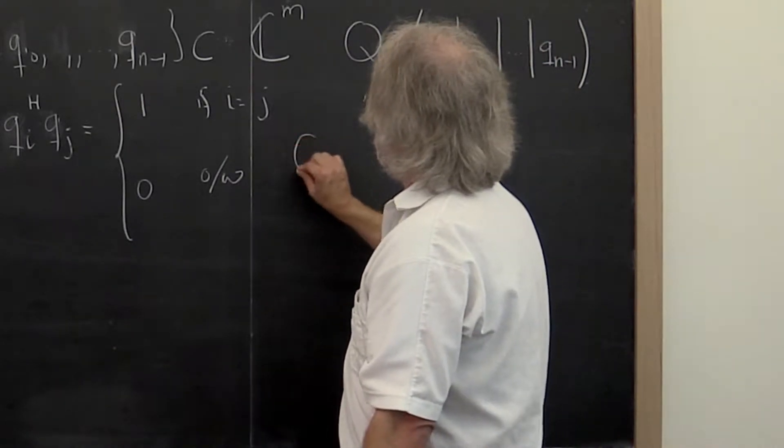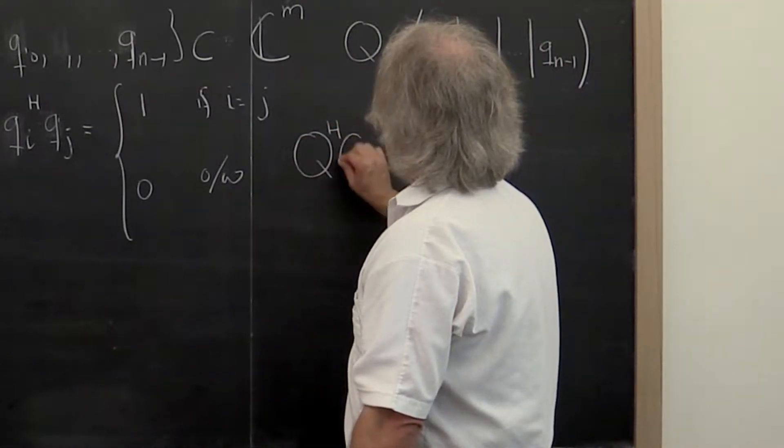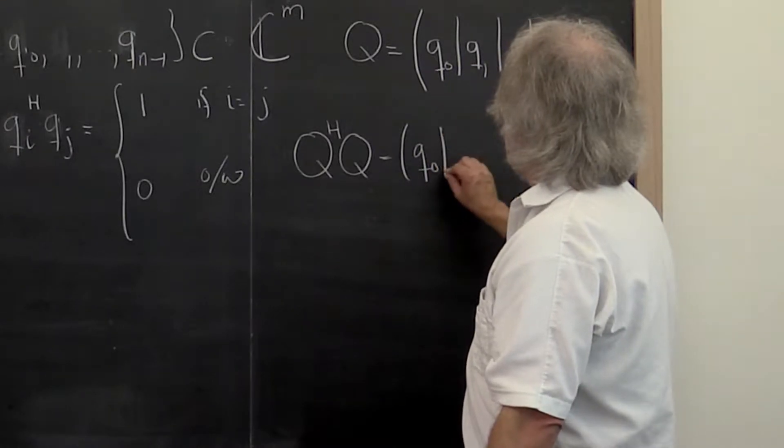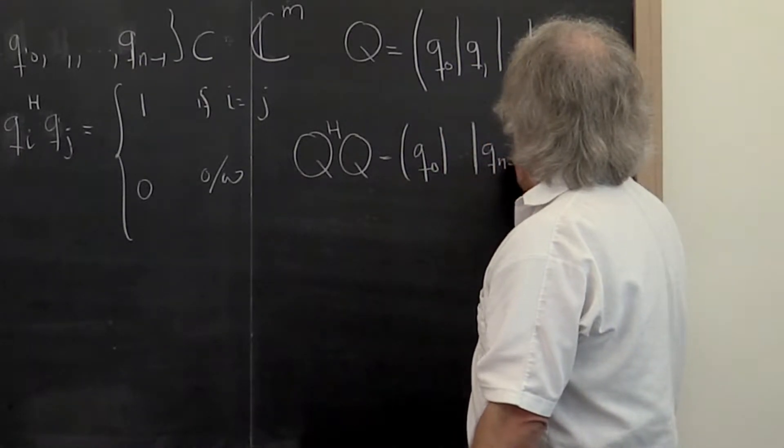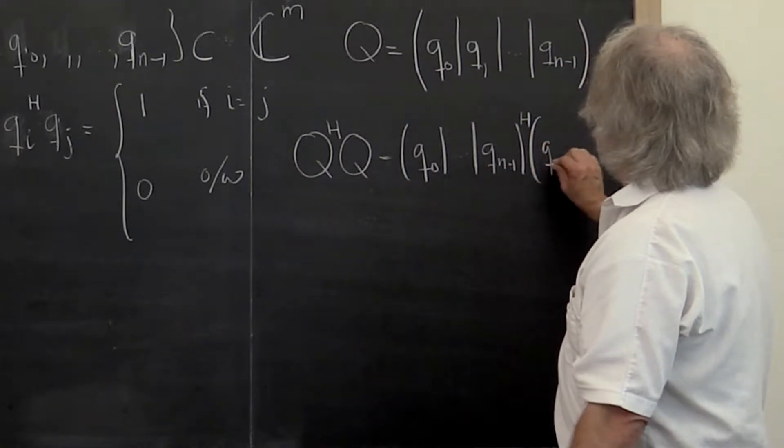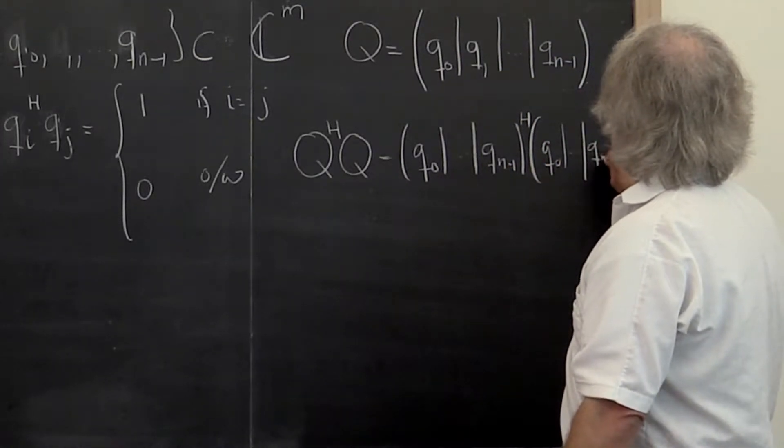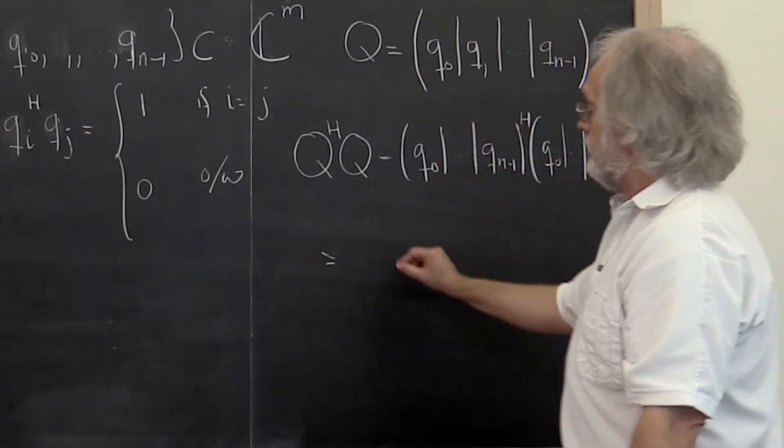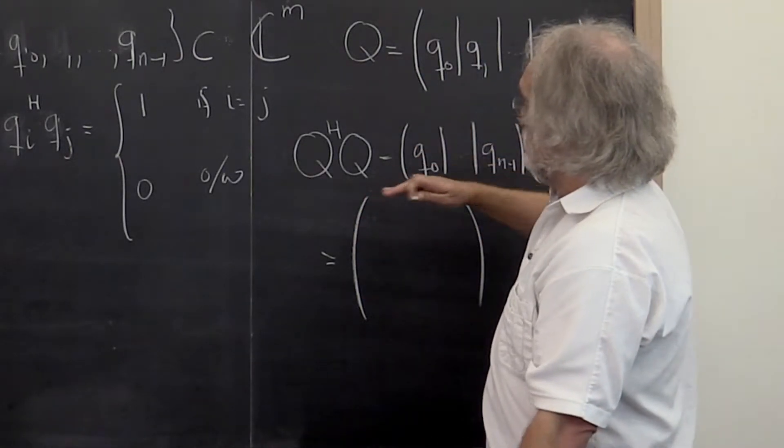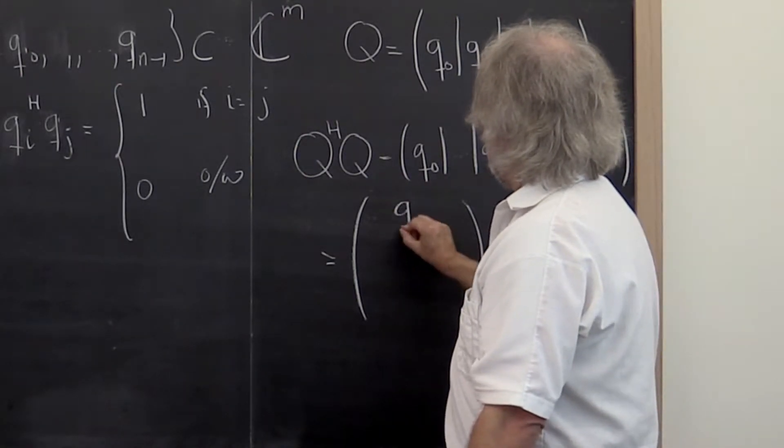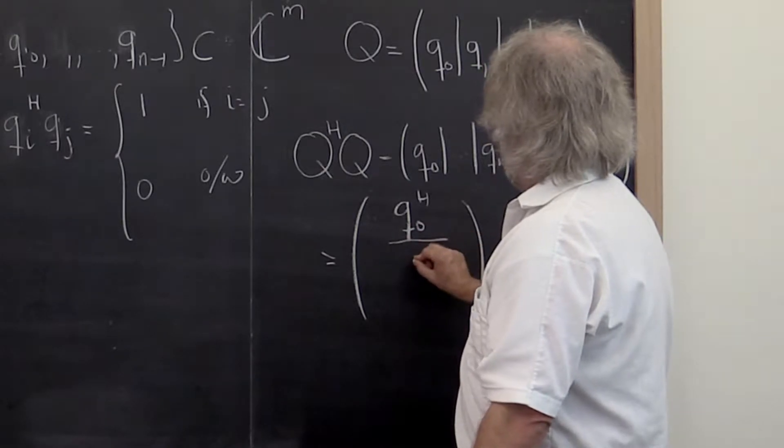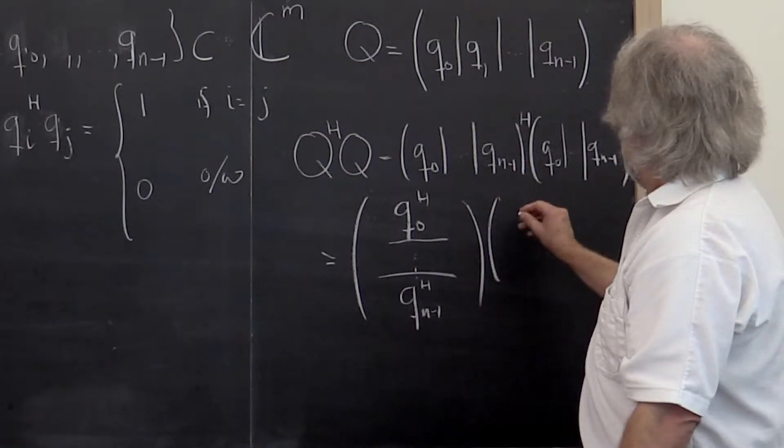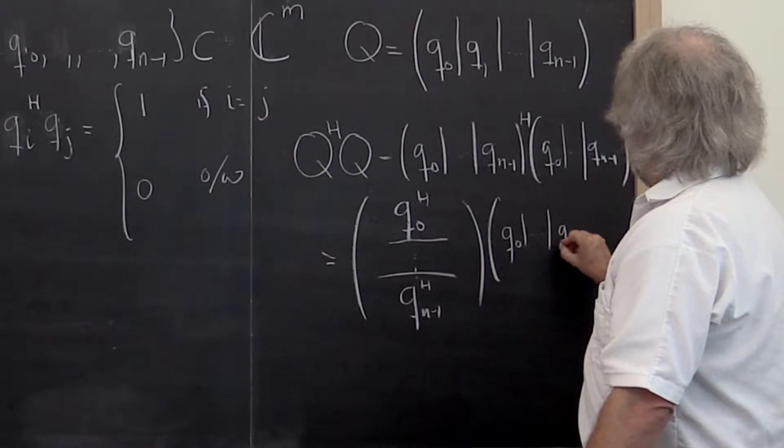What happens if you look at q Hermitian transpose times q? Well, that's q0 through q n minus 1, Hermitian q0 through q n minus 1. Taking the Hermitian transpose of this means that you make columns into rows, but you have to conjugate them as well. So we get q0 Hermitian through q n minus 1, Hermitian times q0 through q n minus 1.